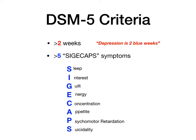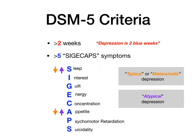Sleep and appetite were left for the end because they can vary across presentations. In typical or melancholic depression, there's decreased sleep — the patient has insomnia — and decreased appetite. But in atypical depression, patients actually sleep too much and eat more. So typical versus atypical depression is differentiated by sleeping and eating too little versus too much. Sleep and appetite differentiate typical from atypical MDD.